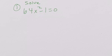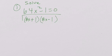Okay, we have a binomial we're going to factor. 64 is a perfect square, and x squared is a perfect square. 1 is a perfect square. It's subtracting, so it's going to be a plus and a minus. The square root of 64x squared is 8x, and the square root of 1 is 1. If I'm factoring, I stop there.